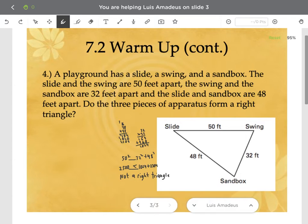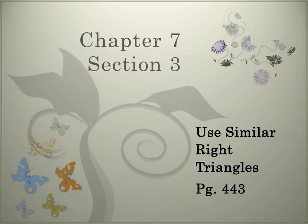Student question: if a squared plus b squared is greater than c squared, is it acute? Yes — I tend to put c squared first, so if c squared is less than a squared plus b squared, it's acute, and if c squared is greater, it's obtuse. If you flip the setup, the comparison flips too. Any other questions on the warm-up? Moving on to section 7.3: using similar right triangles.